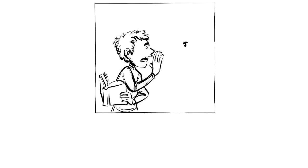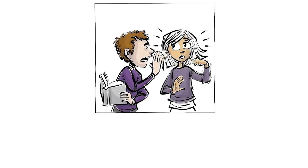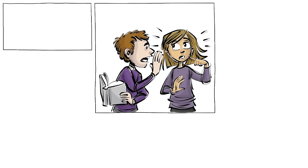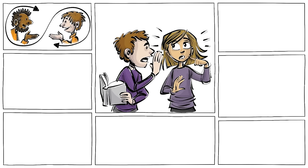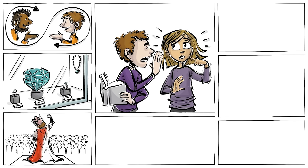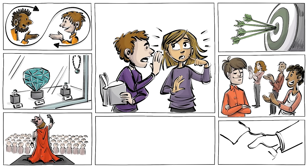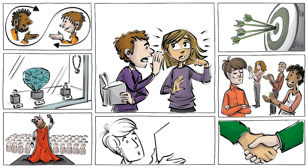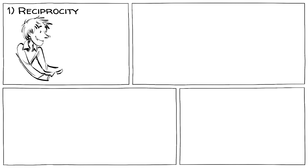The principles of persuasion are a set of psychological rules to influence others. Originally there were six: reciprocity, scarcity, authority, consistency, liking, and consensus. Later, a seventh principle was added.